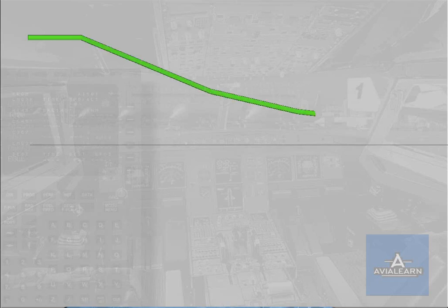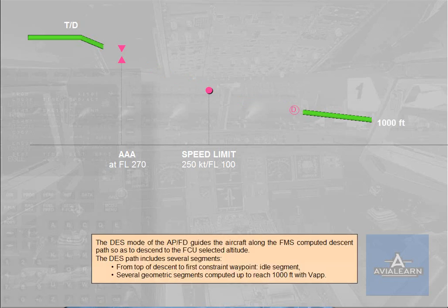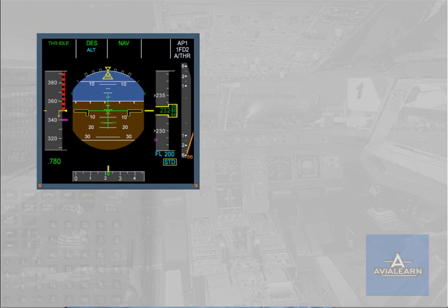The descent mode of the autopilot flight director guides the aircraft along the FMS computed descent path so as to descend to the FCU selected altitude. The descent path includes several segments: from top of descent to the first constraint waypoint as an idle segment, followed by several geometric segments computed up to reaching 1000 feet with the approach. The descent mode guides the aircraft along the pre-computed trajectory with speed target managed.